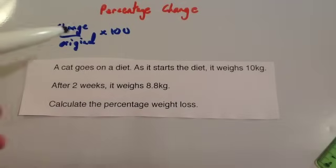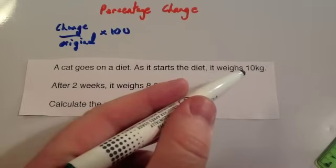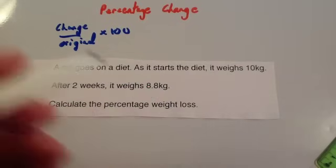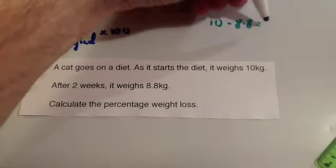The formula is change divided by original times 100. So let's first of all calculate the change. So it was 10 kilograms, it's now 8.8 kilograms. So if you do 10 subtract 8.8, you get 1.2.